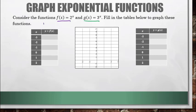For figuring out f of x equals 2 to the x: when x is negative 3, we get 2 to the negative 3. Remember that whenever you have negative exponents, you can rewrite them as positive exponents by putting them in the denominator — so that's the same as 1 over 2 cubed, which is 1 over 8. When x is negative 2, we get 2 to the negative 2, which is 1 over 2 squared, which is 1 fourth. 2 to the negative 1 is 1 over 2. 2 to the 0 is 1.